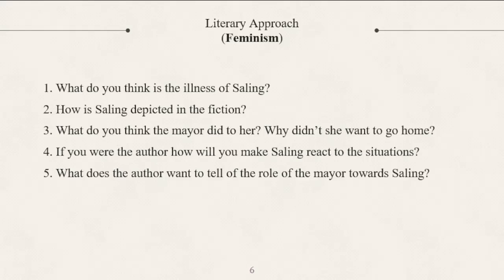Number four: If you were the author, how will you make Saling react to the situation? If I was the author, I'd keep the story the way it is because there wouldn't be a story to tell if I'd follow the courageous way to act. However, what happened to Saling — if I was raped, for example, at present, wherein somehow justice can be attained from time to time and I have the power of social media — I won't wait for my father to commit murder just because I was afraid of the cabeza or of having myself shamed due to the loss of my purity. Instead, I will fight for my rights.